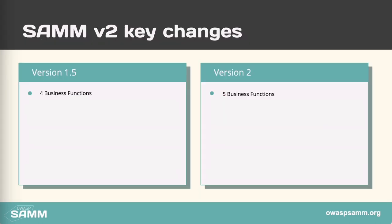SAM has been around for quite some time. Throughout this time the model has evolved, and the core team has refined and polished the model, making it in fact easier to use. This slide shows how the SAM model has changed from version 1.5 to version 2, just to provide an idea of what sort of changes are being added. I would think that upgrades to version 2 are going to be very iterative — I wouldn't expect things like new business functions or new security practices.